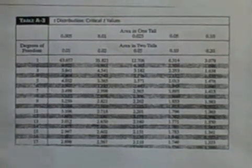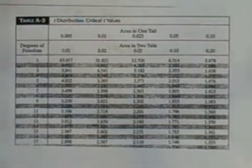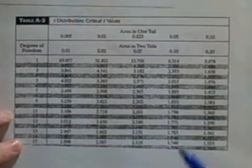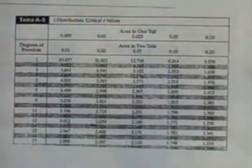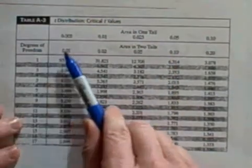All right, we are about to discuss Table A-3, which is a t-distribution critical values for t. It's called t sub alpha over two. We are going to be looking now just at this heading where it says area in two tails. Now across the top are going to be numbers you're not quite sure what they mean.